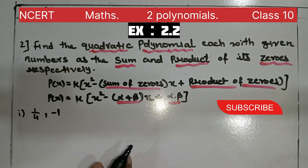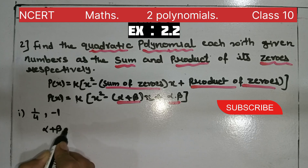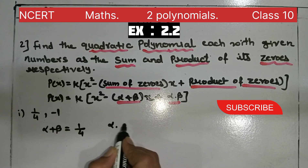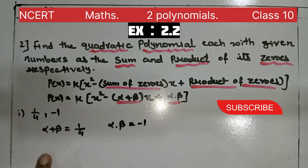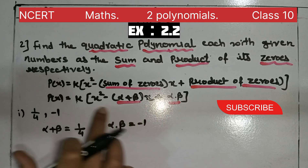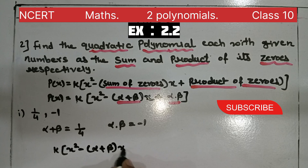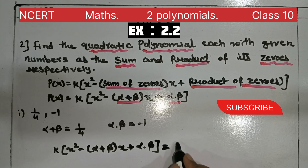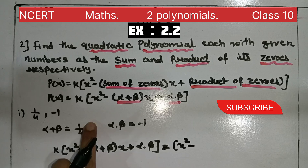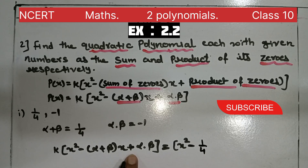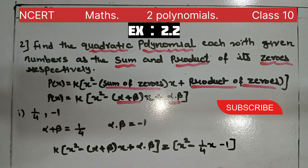The zeros are α and β. We put these into the formula: K[x² - (α+β)x + α·β], with K=1, giving us x² - (1/4)x + (-1). The coefficient of x is 1/4 with denominator 4.